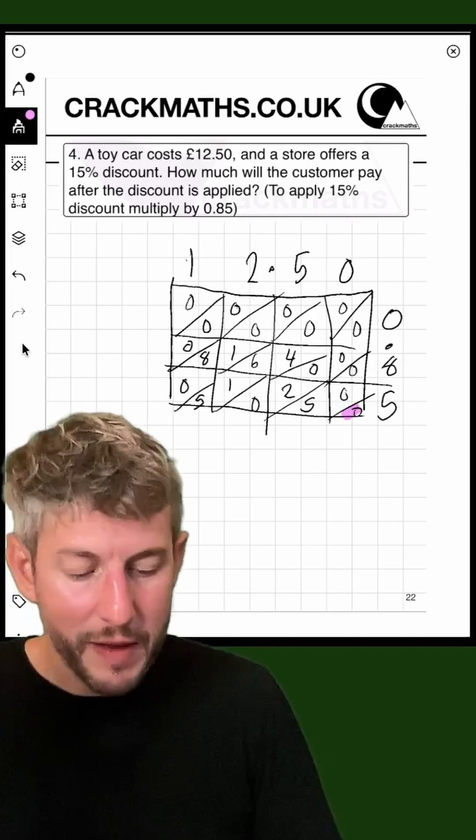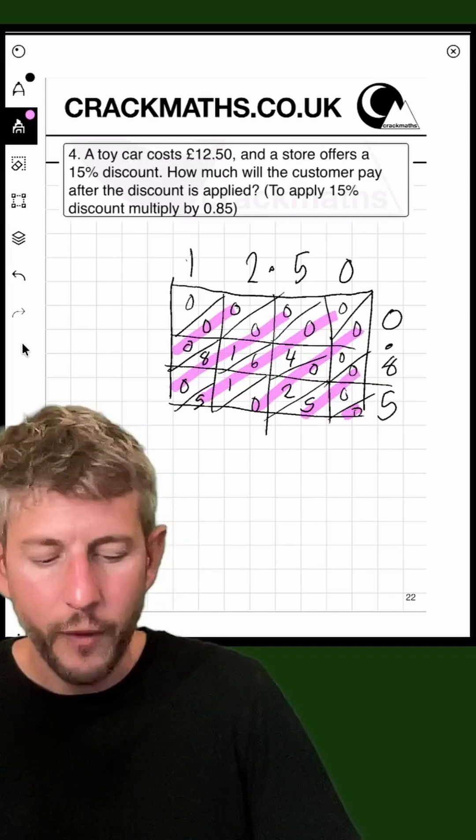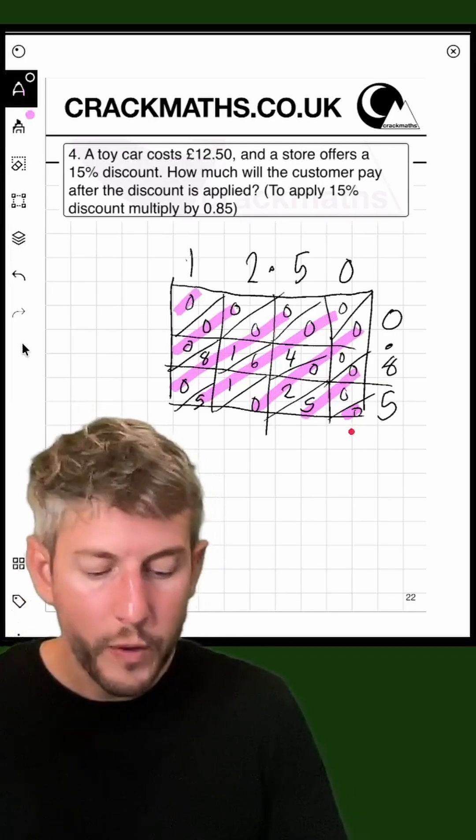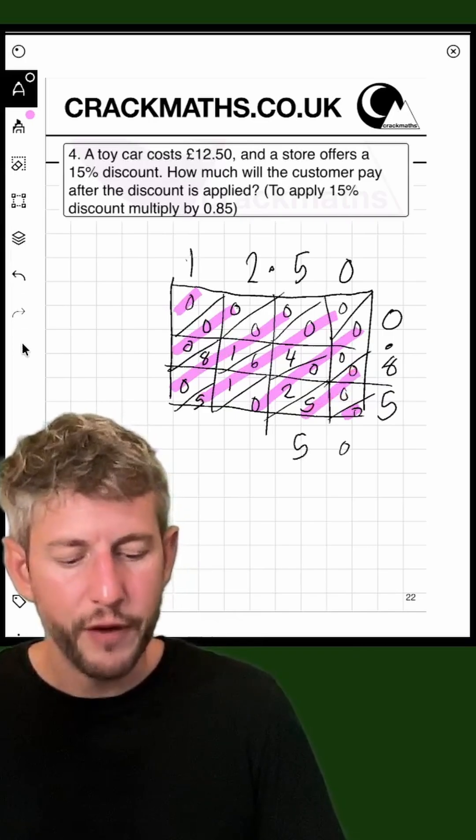Now remember, with this lattice method, if you've not seen it before, we add up down the diagonals that we have created. So first of all, we've got 0 here, so that's just going to be 0. Then we've got 0, add 0, add 5, so that will give us 5.